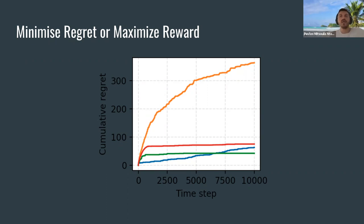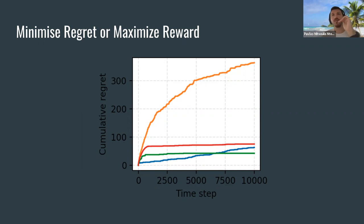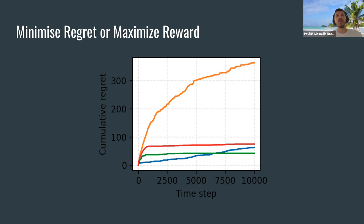What you want to achieve is to minimize regret, or equivalently maximize reward. Regret means: if there was an oracle algorithm that somehow knew the actual reward rates for each arm, it would always choose the best arm and have zero regret. All other algorithms will have non-zero regret — the goal is to find the algorithm with minimum regret, which translates to maximum reward.